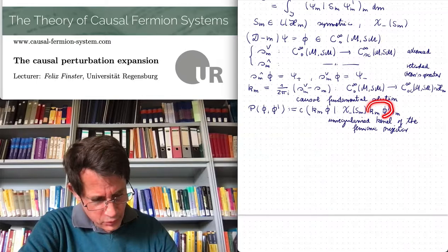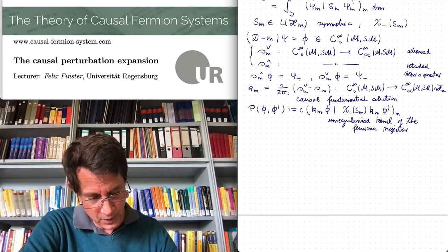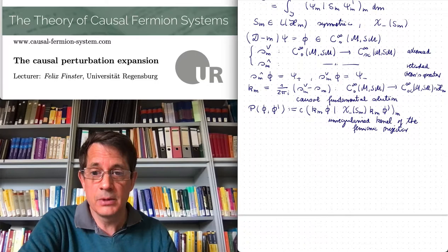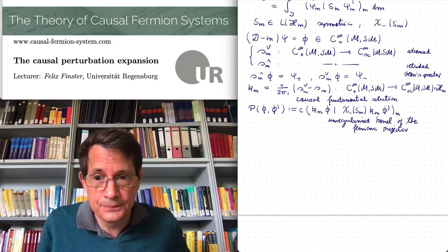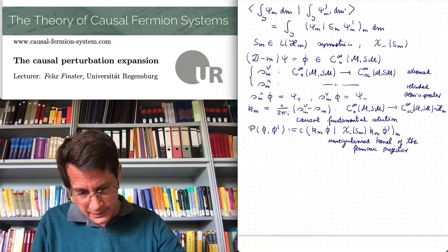Note that K_M φ' is a solution of the Dirac equation, so we are in the Hilbert space H_M. We can apply this projection operator, and then we still have a vector in the Hilbert space. On the left side, we also have a vector in the Hilbert space, and therefore this scalar product is well-defined. So these are the basic constructions, and the question is how can we do this perturbatively? This is not so obvious.